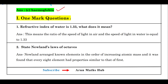The refractive index of water is 1.33. This means that the ratio of the speed of light in air to the speed of light in water is equal to 1.33.